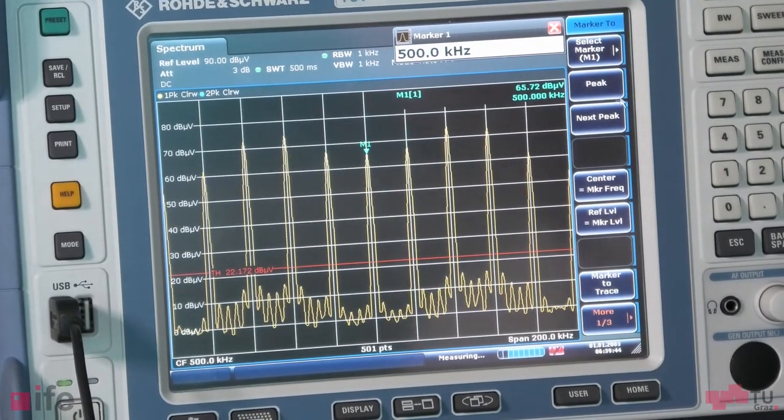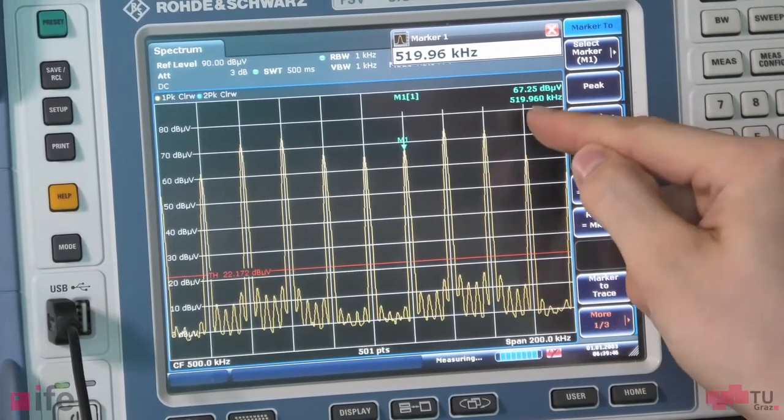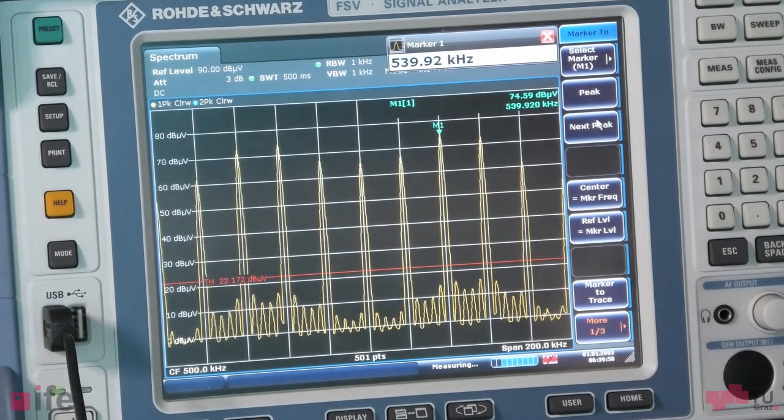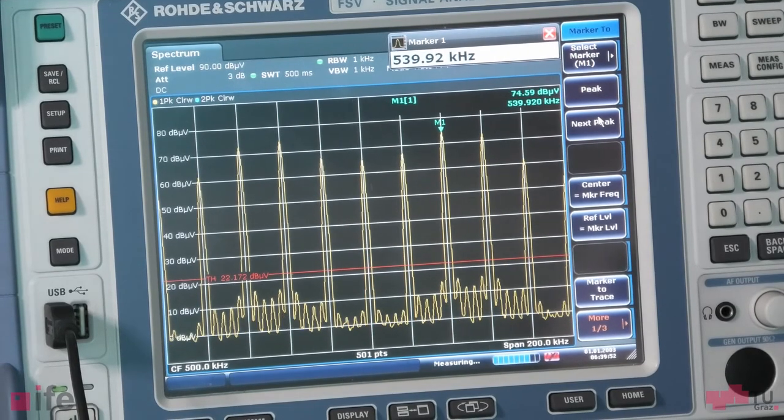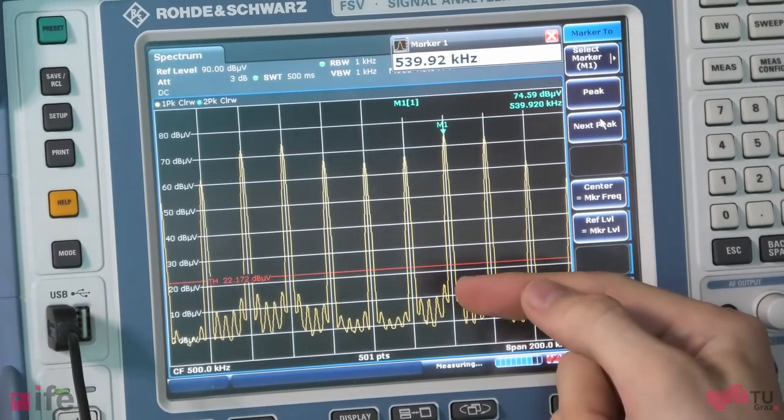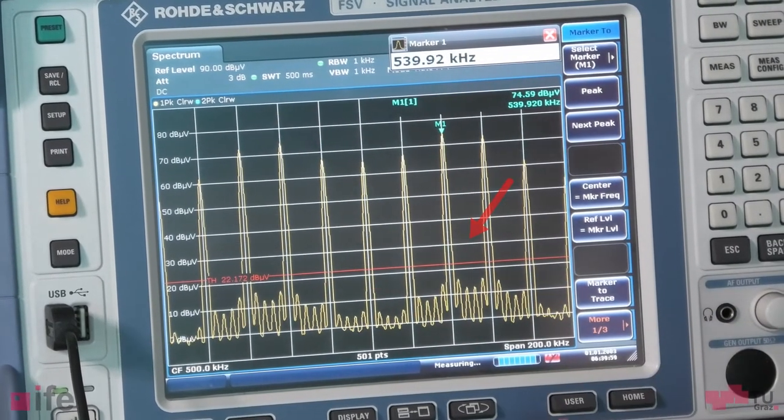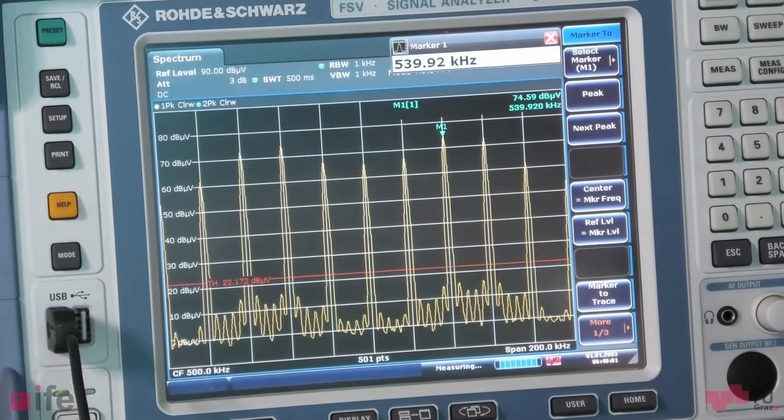So when we go to the next peak we can see it is at 520 kilohertz and the next one at 540 kilohertz and you might have noticed we didn't even see a peak at 550 kilohertz even though we are jumping between 550 and 450 kilohertz.